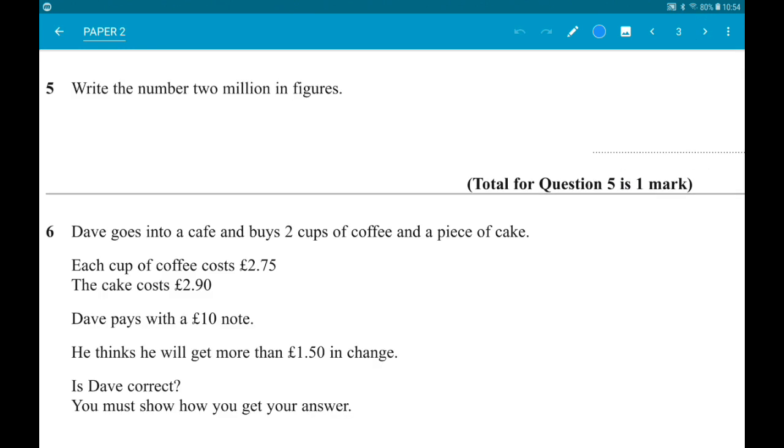Number 5: write the number two million in figures. So a million has six zeros, so this is 2,000,000.